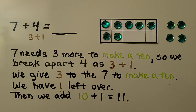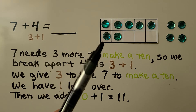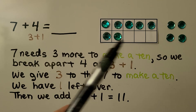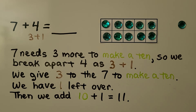Here we have 7 plus 4. We can break the 4 apart into a 3 plus 1. We have 7 gems in our 10-frame. We only need 3 more gems to make a 10: 1, 2, 3. And that leaves 1 left over. The 7 needs 3 more to make a 10, so we break apart 4 as 3 plus 1. We give 3 to the 7 to make a 10. We have 1 left over.